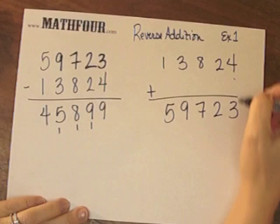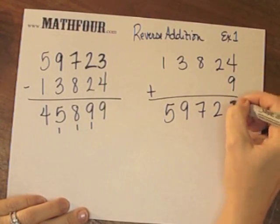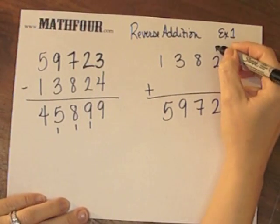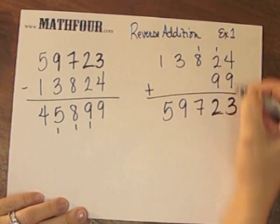What would I have to put here in order to make this flow? Well, 4 and 9 is 13, carry the 1. 2, 3 and 9 gives me 12, carry the 1.